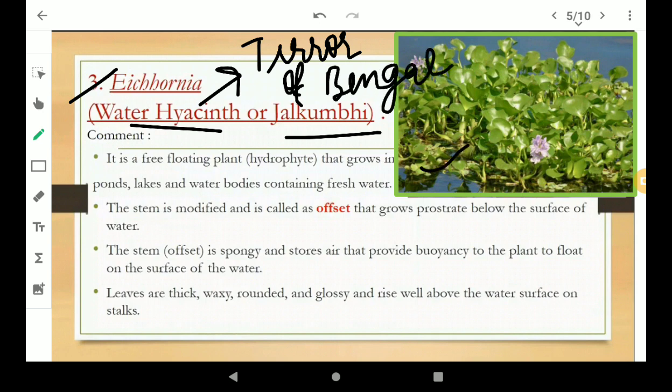It includes water hyacinth and jalakumbhi. Water hyacinth is also known as terror of Bengal. This is a diagram of water hyacinth. It is a free floating plant hydrophyte that grows in polluted stagnant water containing freshwater.